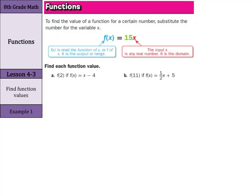Now, in order to find function values, to find the value of a function for a certain number, substitute the number for the variable x. This is read f of x, or function of x. So f of x equals 15 times x. x is the input, the domain. f of x is the output, or the range.